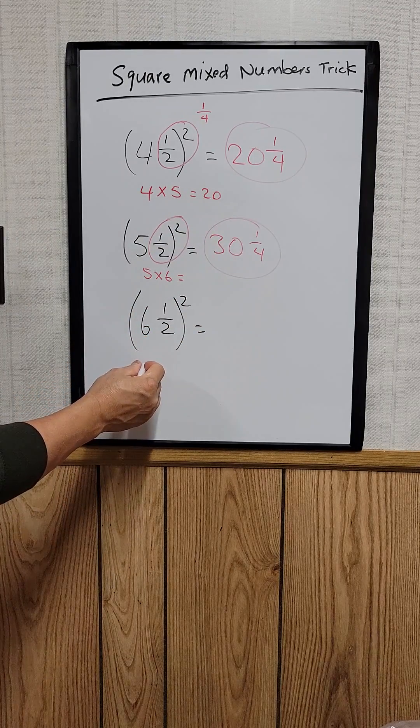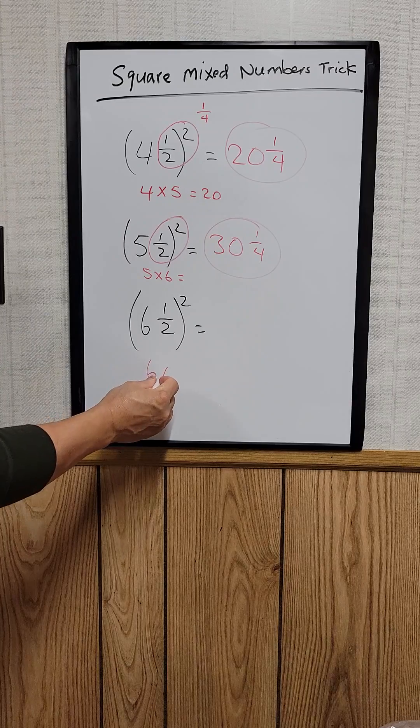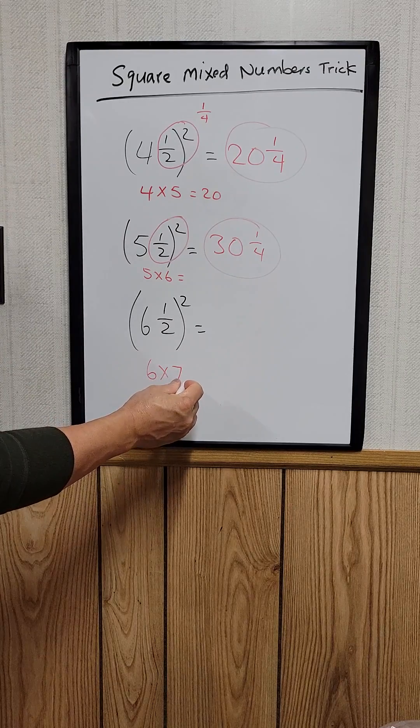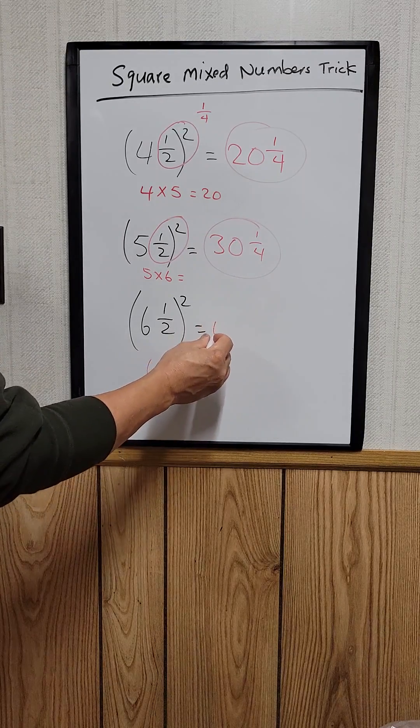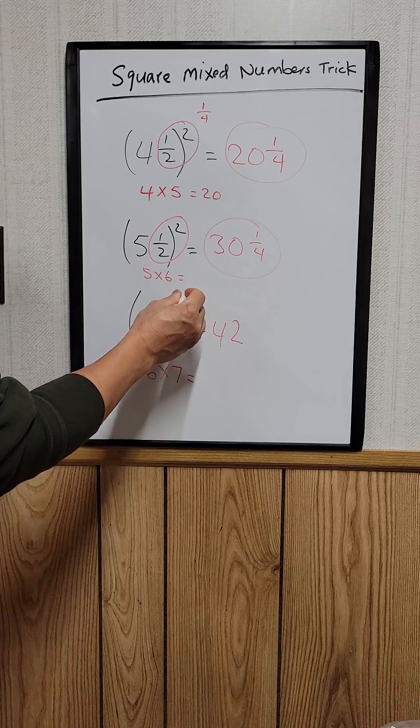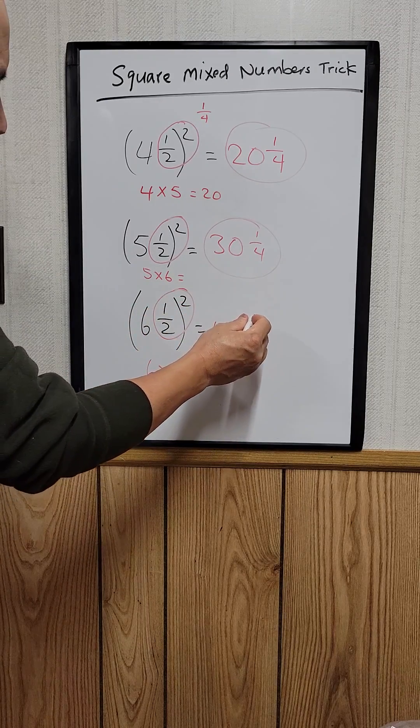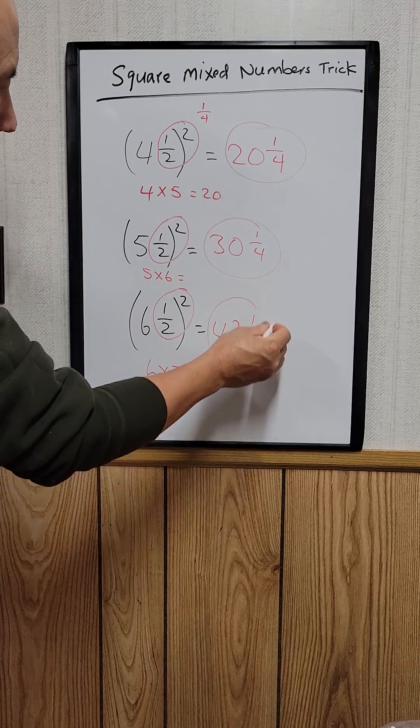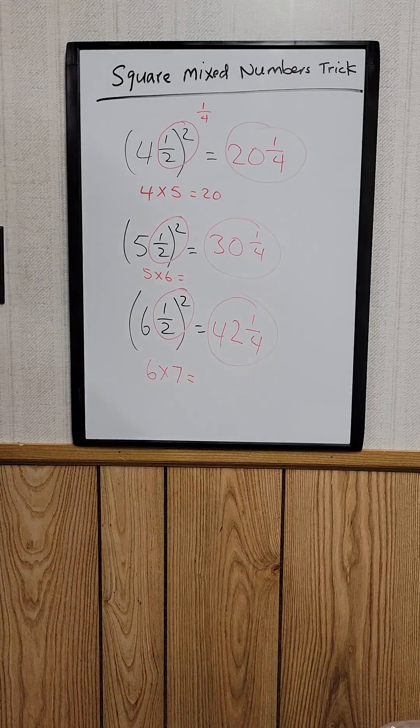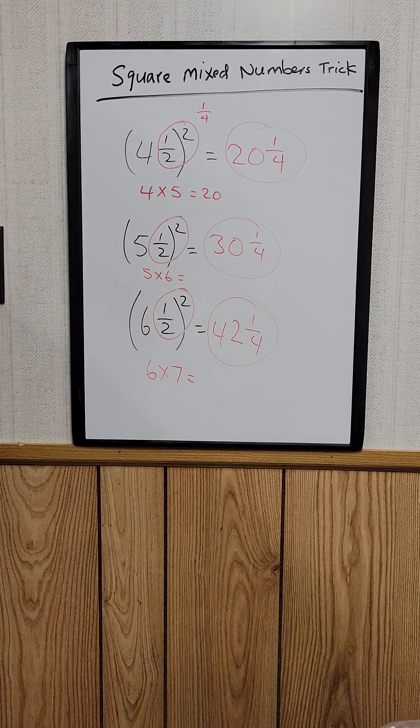The next one will be six, the next number will be seven, this will be 42, and then you square this will be one-fourth. So thank you very much for watching. If you like my videos please like, share and subscribe. Bye bye.